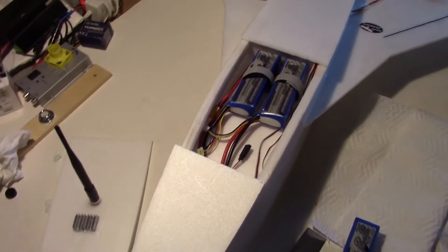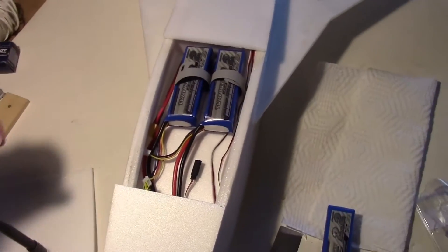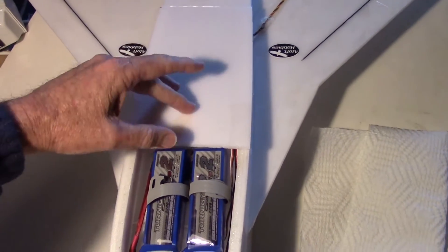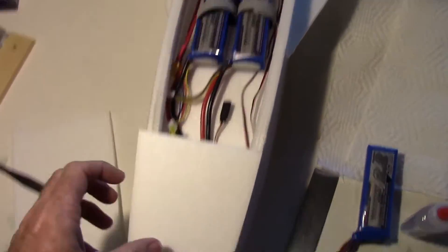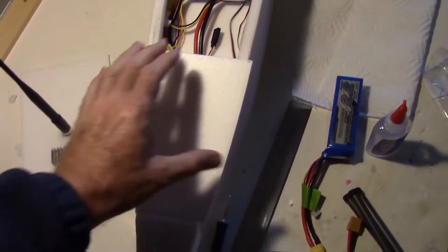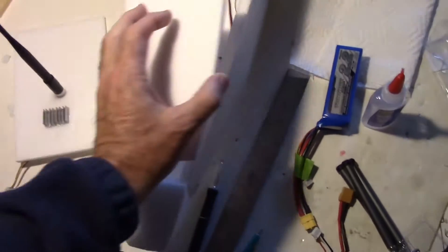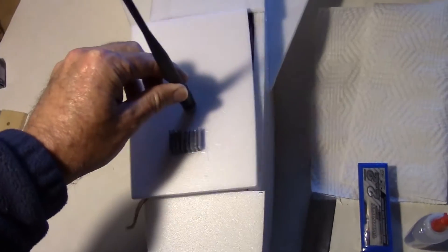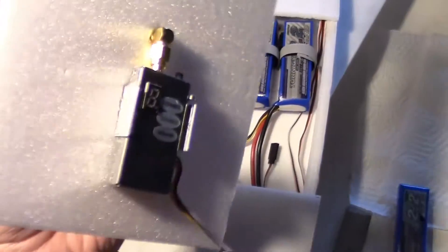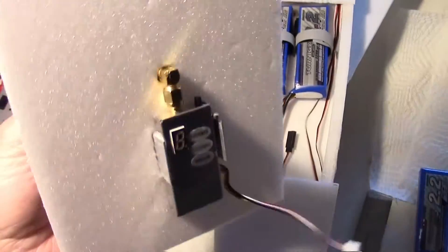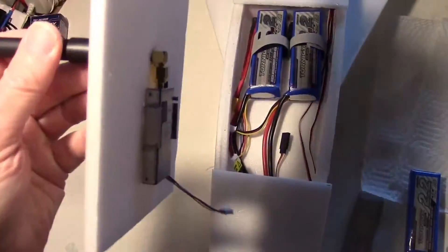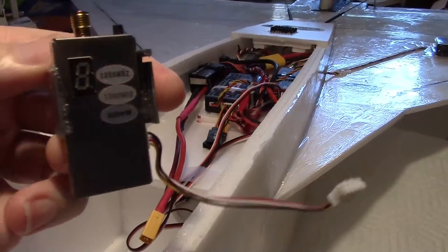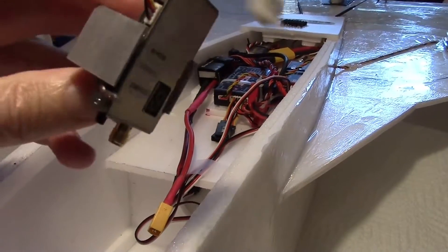So I decided to do the rest of the top lid here in three sections. So I've got one section here to cover the Vector flight controller. And then I have a section up front here where the camera is going to go. And then I've got a third section here with the video transmitter. Antenna going through with an elbow. And this is an 800 milliwatt 1.3 gigahertz transmitter.